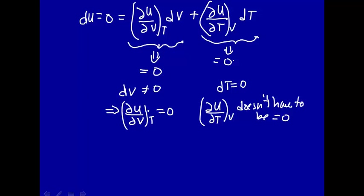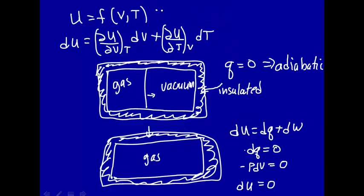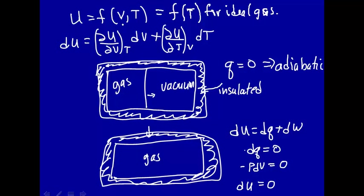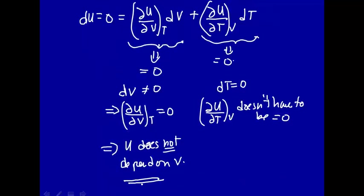That first term — the partial of u with respect to volume at constant temperature — has to equal zero. This implies that u does not depend on volume. So u does not depend on volume; it just depends on temperature. The internal energy is just a function of temperature for an ideal gas.